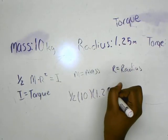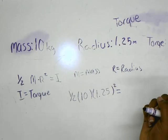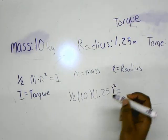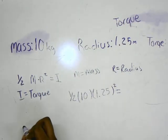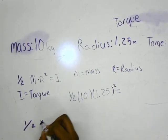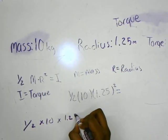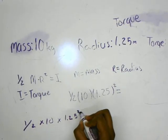And then in the calculator, you could put it in this way: 1 with the division sign, and then 2 times 10 times 1.25 squared. And then hit enter, and you should get 7.825.